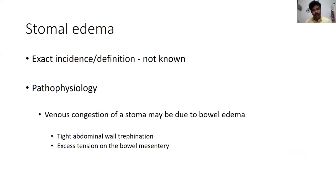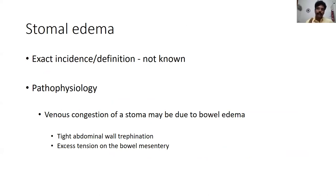Coming to individual complications, the first is stoma edema. The exact incidence or definition is not well established — it is rather surprising that for a complication we see on a daily basis, there is no proper definition. I would probably term a stoma edematous when I don't see the mucosal folds clearly. The pathophysiology usually involves venous congestion resulting from a tight abdominal wall opening or excess tension on the bowel.